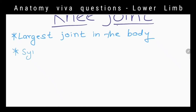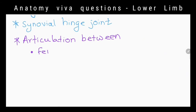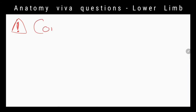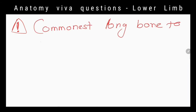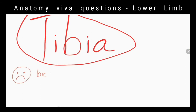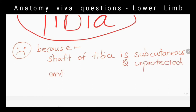What is the largest joint in the body? The knee joint. What is the joint type? Synovial hinge joint. What are the articulations? Between the femoral and tibial condyles, and between the patella and the patellar surface of the femur. Why is the tibia vulnerable? Because the shaft of the tibia is subcutaneous and unprotected anteromedially throughout its course, and it is also slender on its lower third.